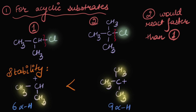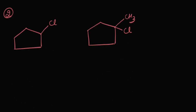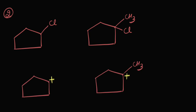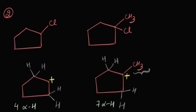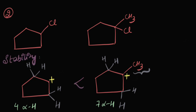Let's take another example — here I have two cyclic substrates waiting to react via an SN1 mechanism. The leaving group is still the same: Cl⁻. So let's quickly make the carbocations in each case. Each neutral carbon atom will form four bonds. In the first case I can see four alpha hydrogens, while in the second case I can count one, two, three, four and three — seven alpha hydrogens.